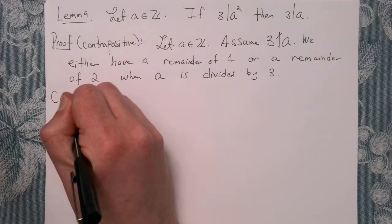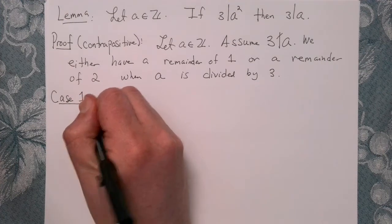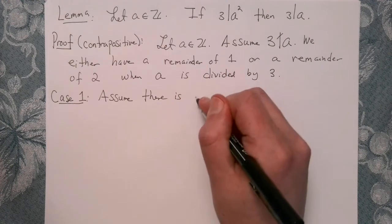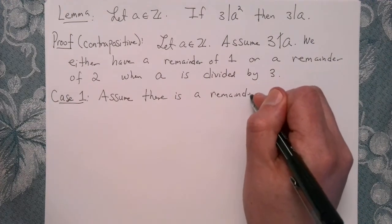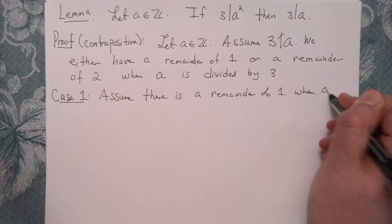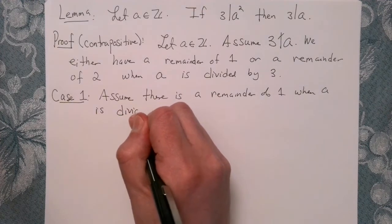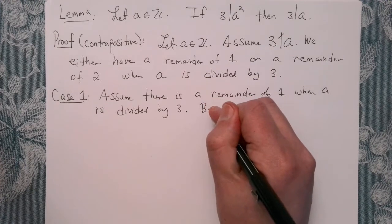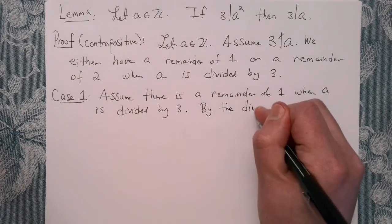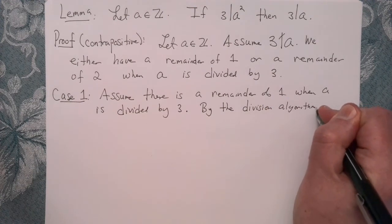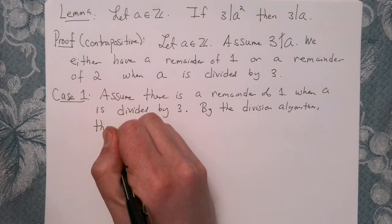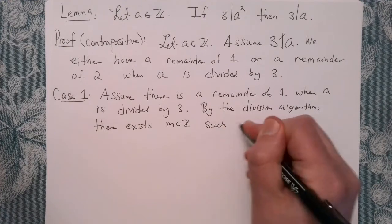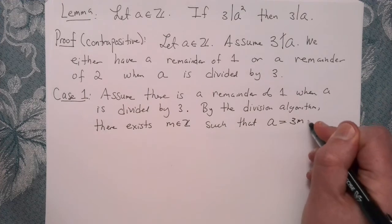So case 1. So let's assume there's a remainder of 1. Assume there is a remainder of 1 when A is divided by 3. Okay, so by the division algorithm, there's some integer M such that A equals 3M plus remainder 1.